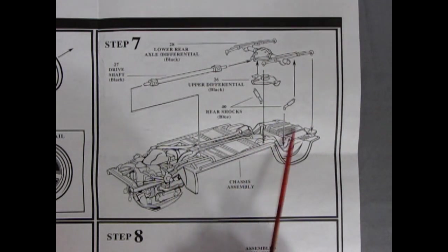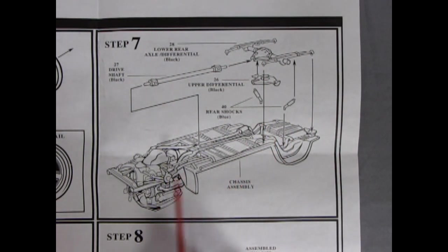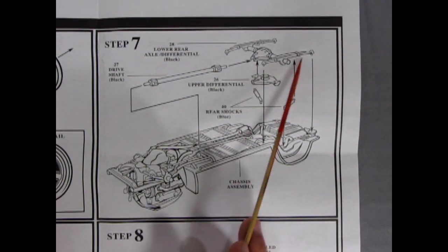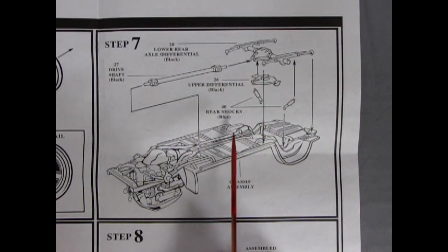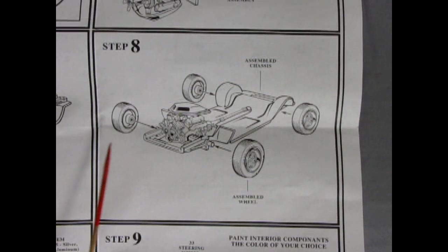So you have torsion bars up front, shock absorbers, and torsion bars up front, long leaf springs in the back. And that's how these Chrysler pony cars were built. Step eight shows our wheels being put onto the axles.